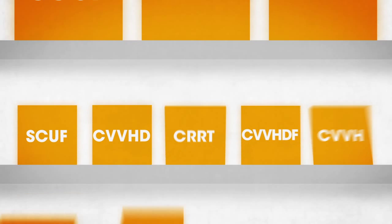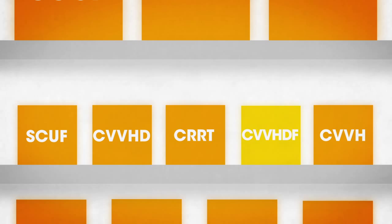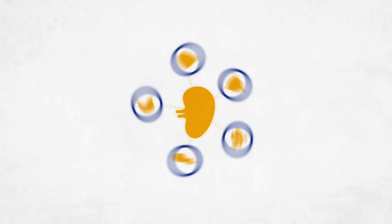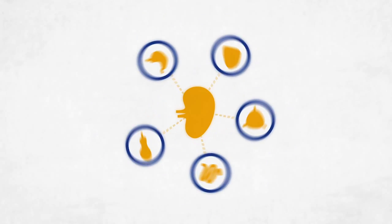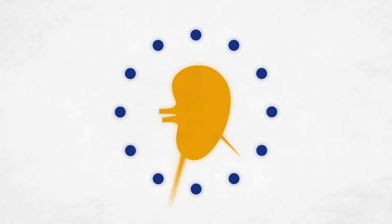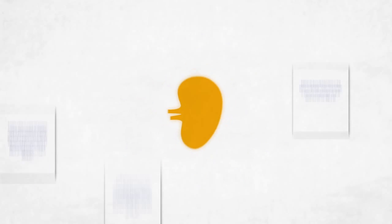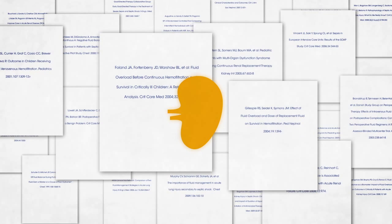So you may feel the way you deliver renal replacement therapy won't make a significant difference. But since the kidney is designed to continually support the functions of a whole host of other organs, wouldn't it make sense to use a renal replacement therapy that works 24-7 just like the kidney? And what if a continuous treatment option existed that was supported by convincing evidence?